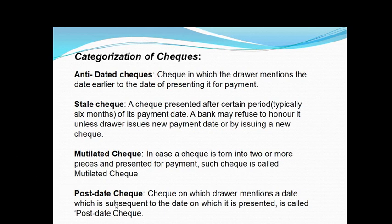There are different categories of cheques: anti-dated cheque, stale cheque, mutilated cheque, and post-dated cheque. An anti-dated cheque is one in which the drawer mentions a date earlier than the date of presenting it for payment. These cheques are valid up to three months from the date of issue.